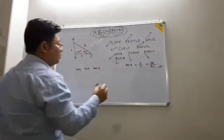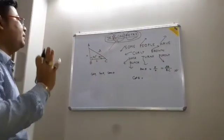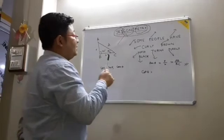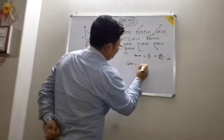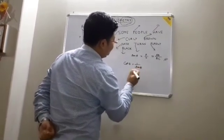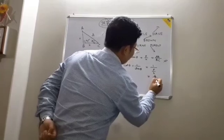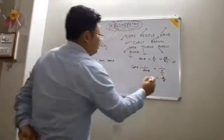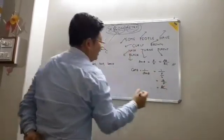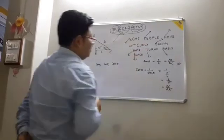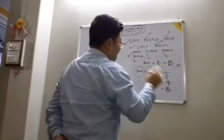Now what is cot theta? By using this line, we get three trigonometric ratios: sine theta, cos theta, and tan theta. Cot theta is the reciprocal of tan theta. So cot theta equals 1 divided by (P/B), which gives B by P — base by perpendicular — that is BC by AB.